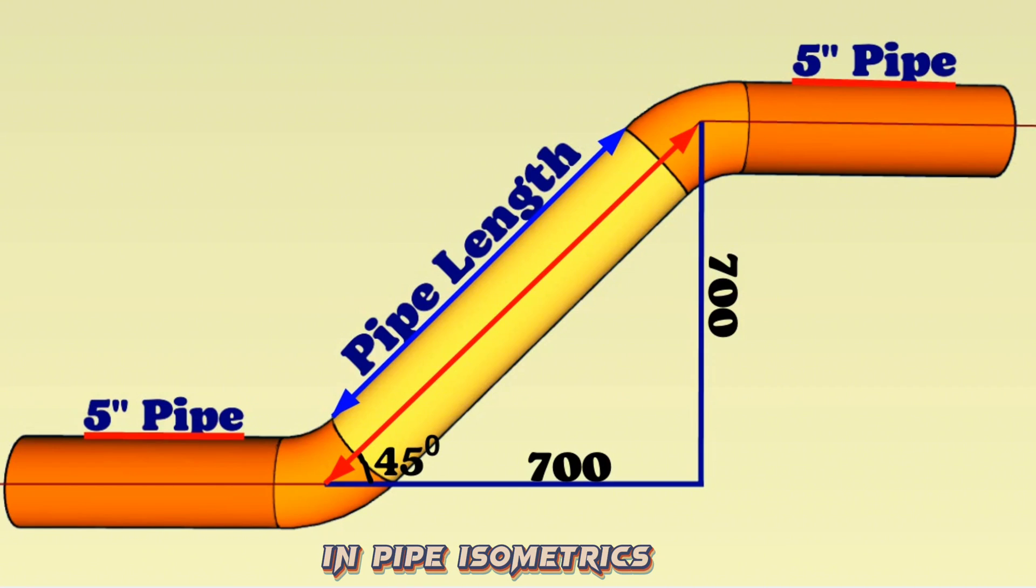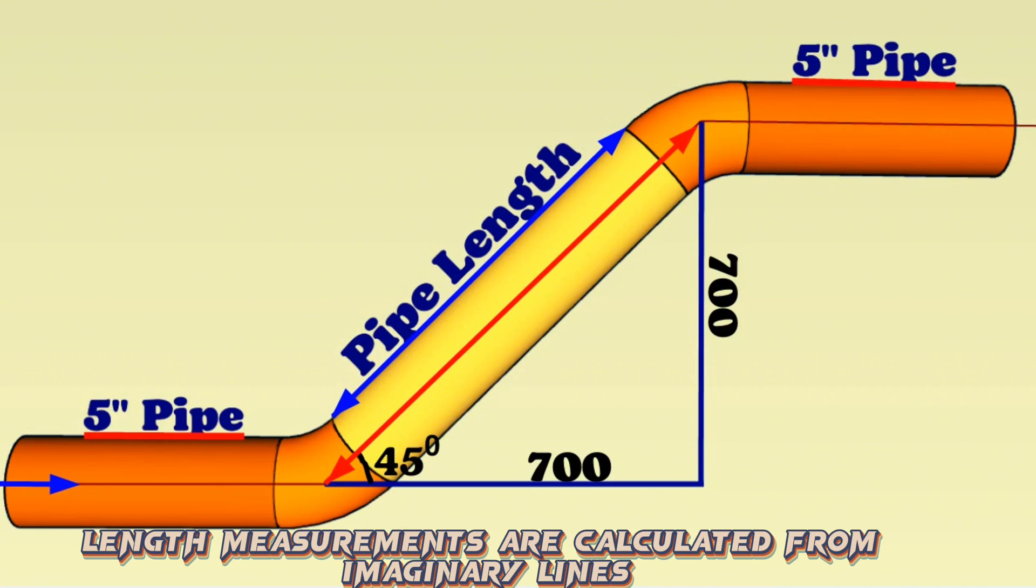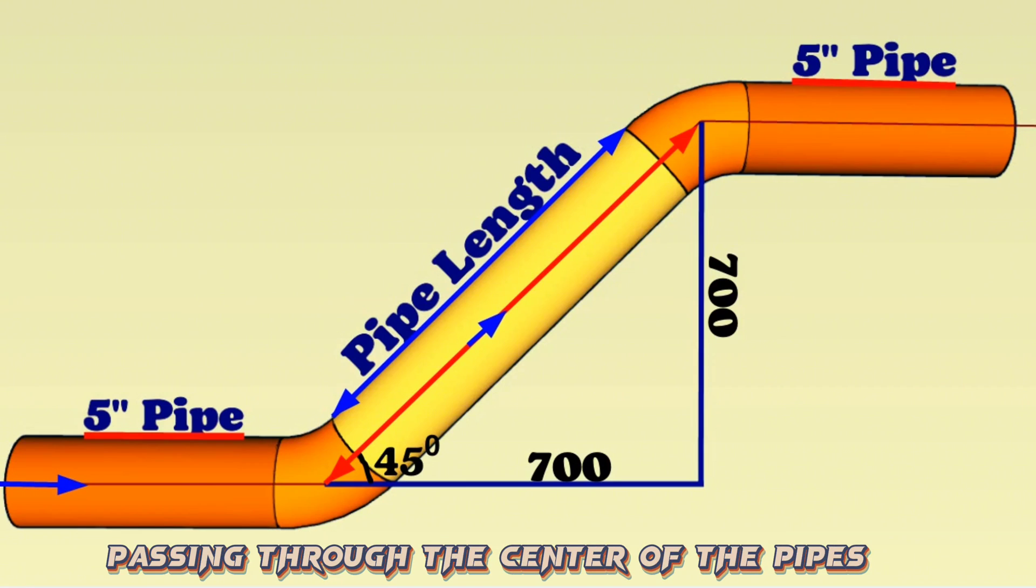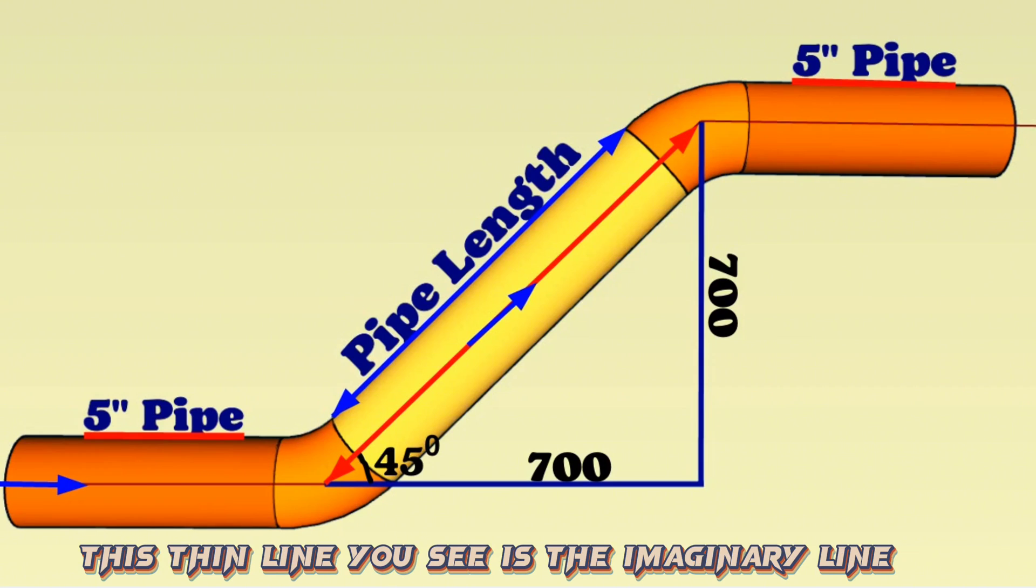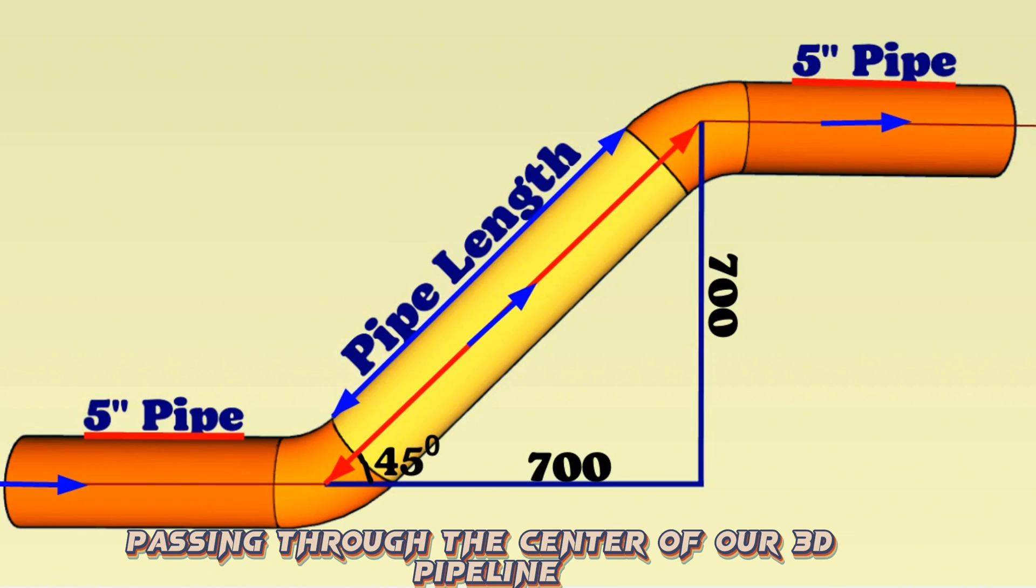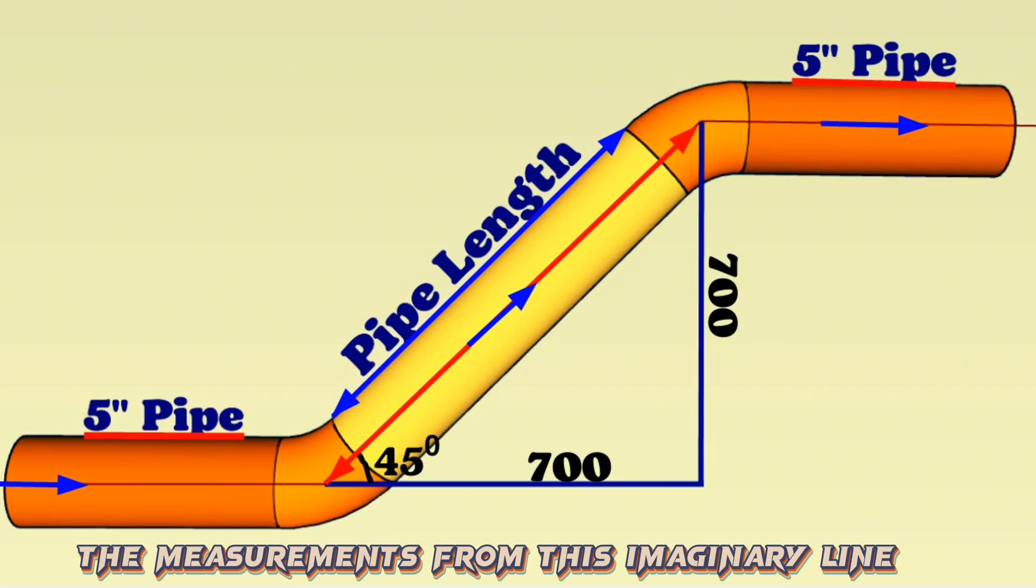In pipe isometrics, length measurements are calculated from imaginary lines passing through the center of the pipes. This thin line you see is the imaginary line passing through the center of our 3D pipeline and we will calculate the measurements from this imaginary line.